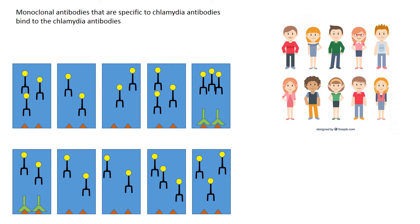These monoclonal antibodies that are specific only to chlamydia antibodies will bind to any chlamydia antibodies that are there. If there are no chlamydia antibodies, these monoclonal antibodies will not stick to anything. They won't bind to the antigens.